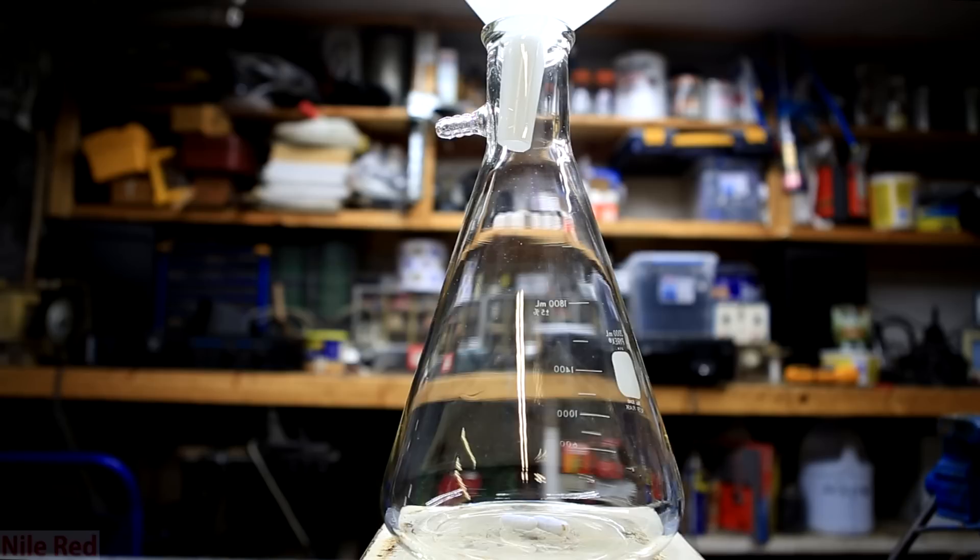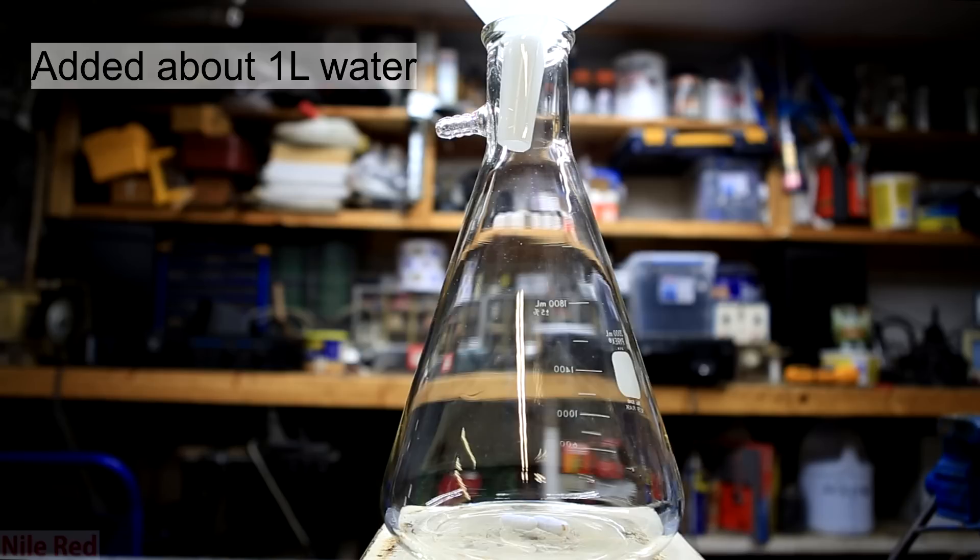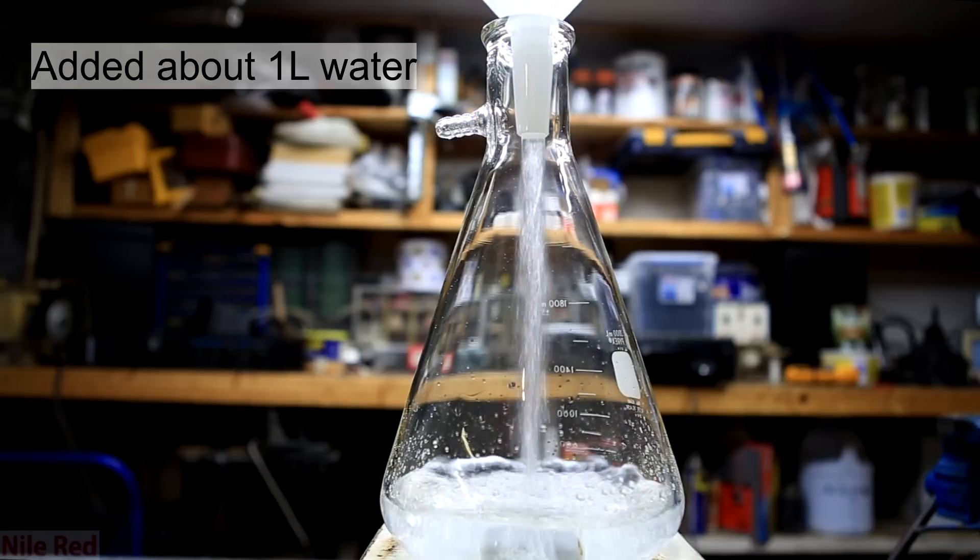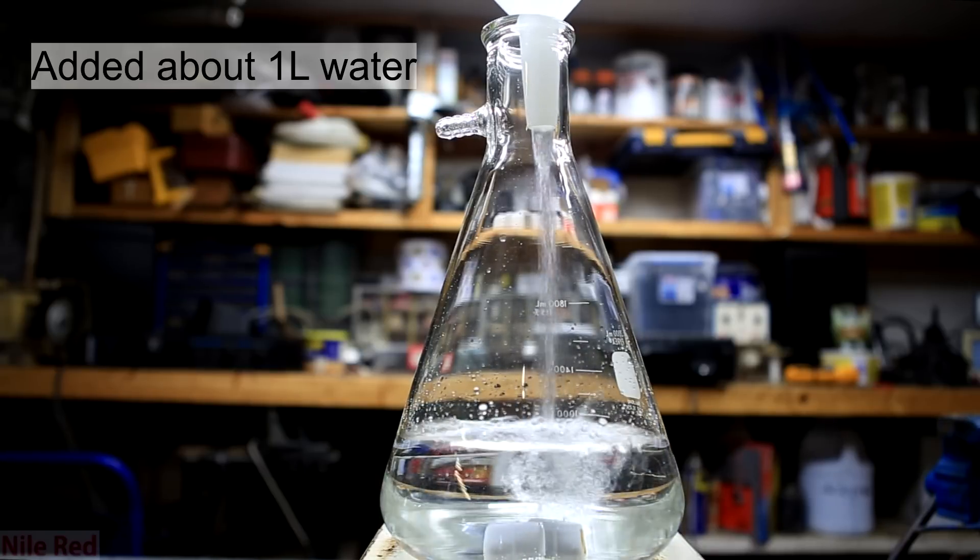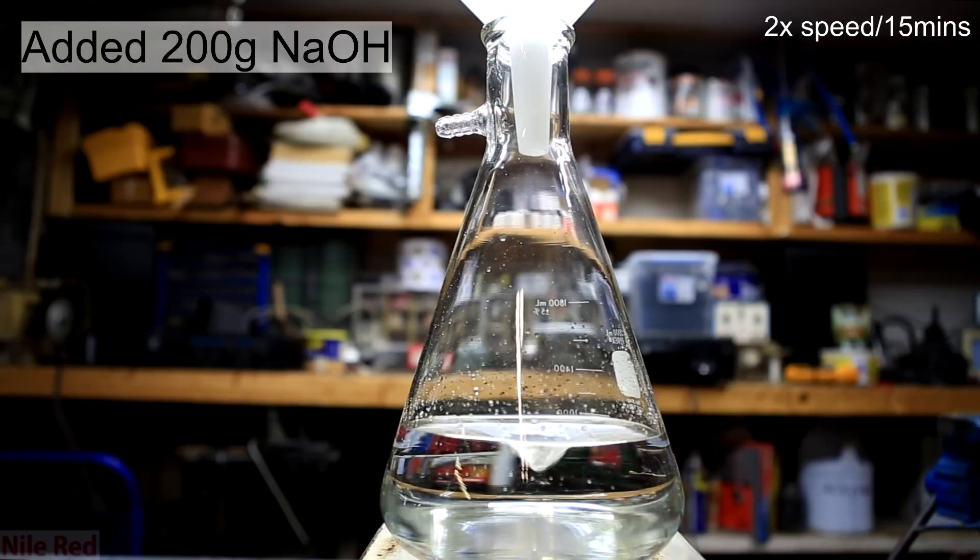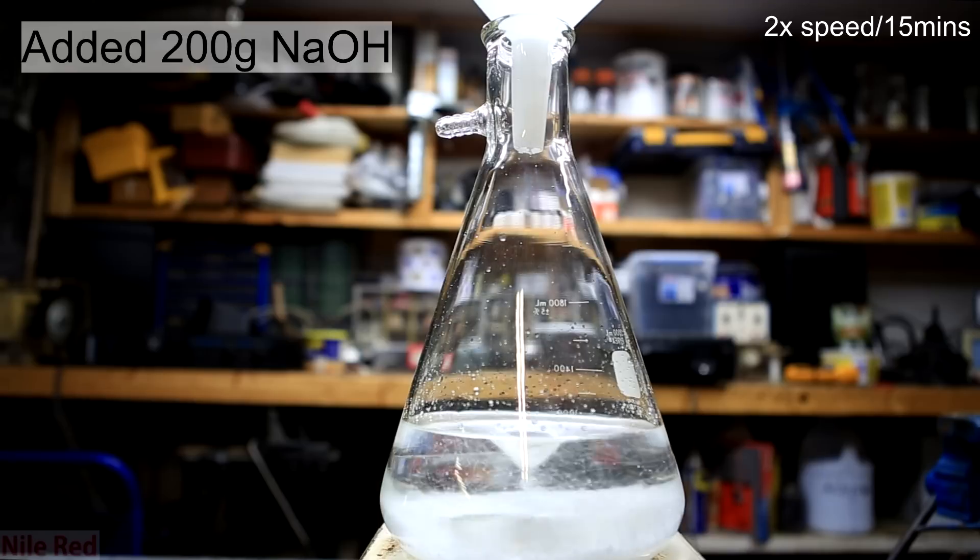Now to make the base bath, which has a procedure that's a little longer and significantly more costly. To a suitably large container was added one liter of distilled water. To this was added about 200 grams of sodium hydroxide.